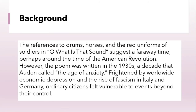Background: the reference to drums, horses, and the red uniforms of soldiers in 'O, What Is That Sound?' suggests a faraway time, perhaps around the time of the American Revolution. However, the poem was written in the 1930s, a decade that Auden called the Age of Anxiety. Frightened by worldwide economic depression and the rise of fascism in Italy and Germany, ordinary citizens felt vulnerable to events beyond their control.